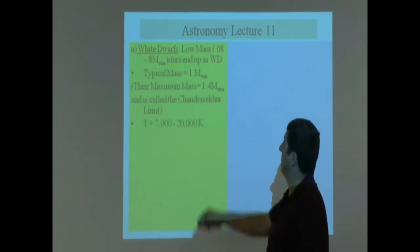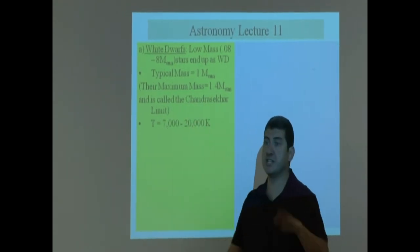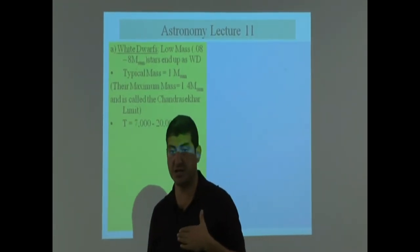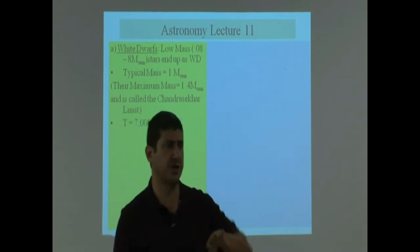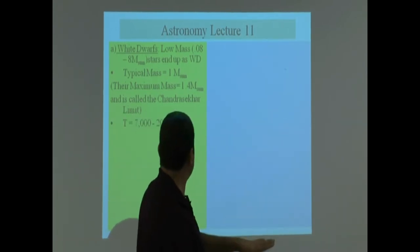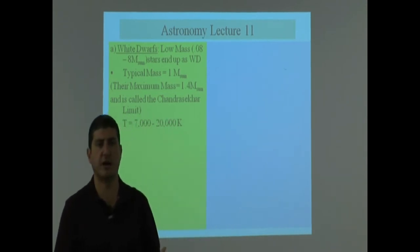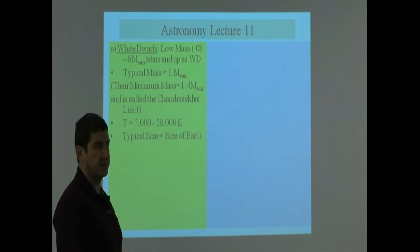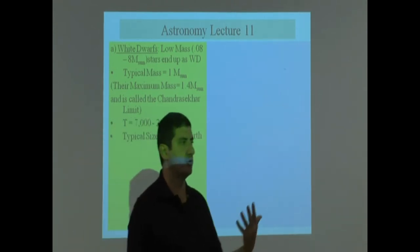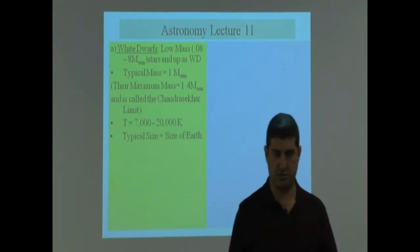The temperatures of white dwarfs, they're generally going to be hotter than our sun. Our sun's temperature is 5,800 Kelvin. White dwarfs are going to be hotter, 7,000 to roughly around 20,000 Kelvin. Typical size, they're going to be the same as the size of the earth, which is one-hundredth the size of the sun.